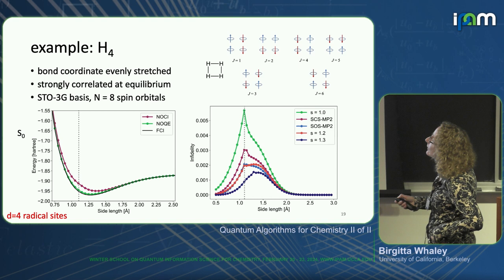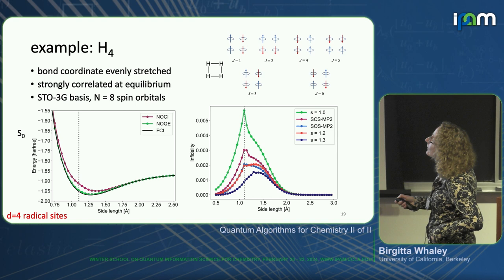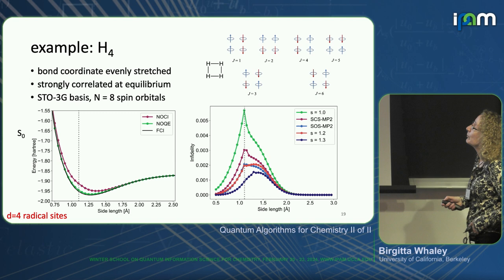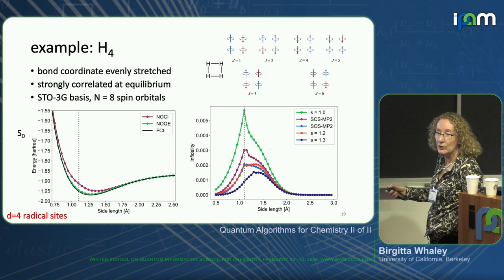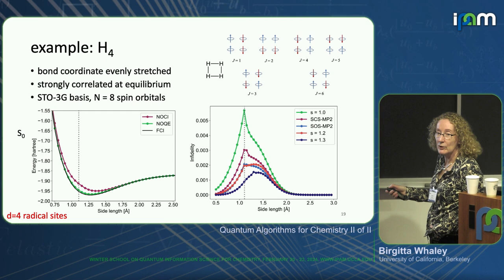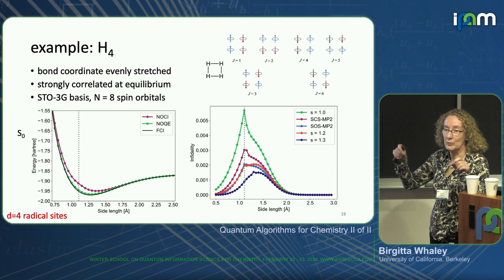H4 is not a real molecule — it's a well-known benchmark for strongly correlated systems in quantum chemistry. It's four hydrogen atoms, four electrons, in a square arrangement — highly constrained and very unnatural for hydrogen. There are eight spin orbitals in the simplest basis.